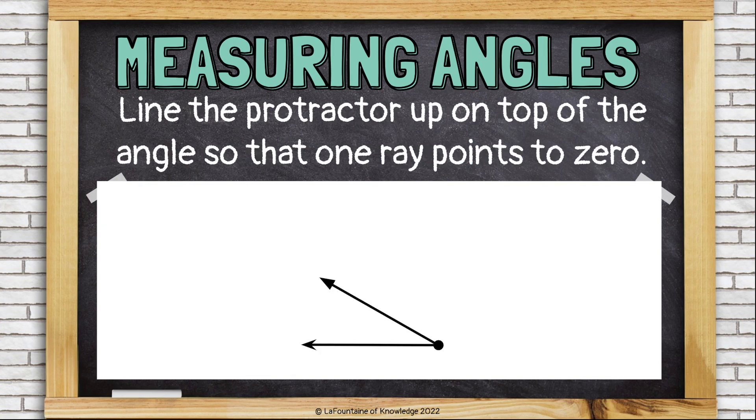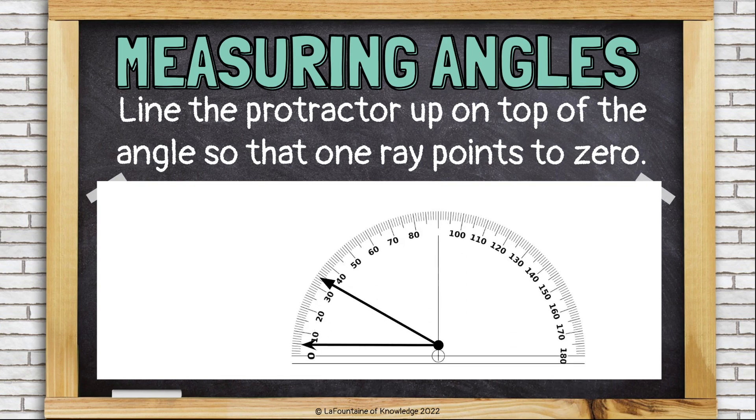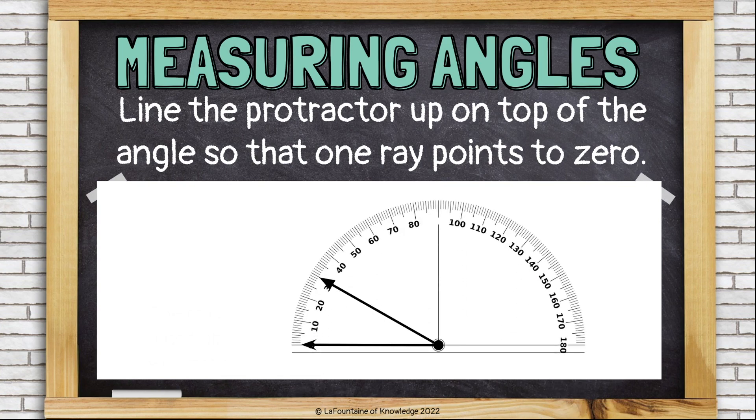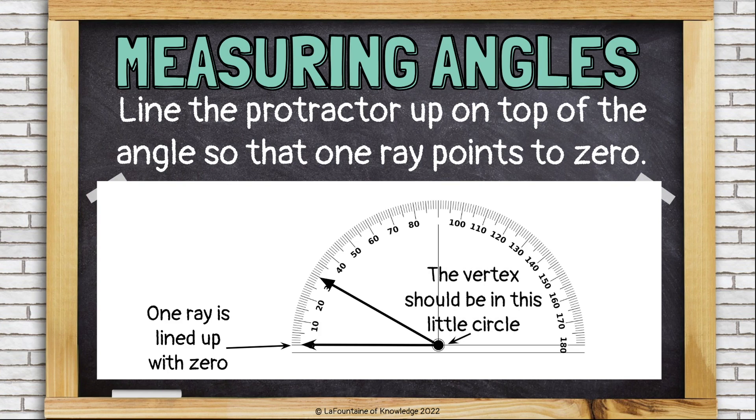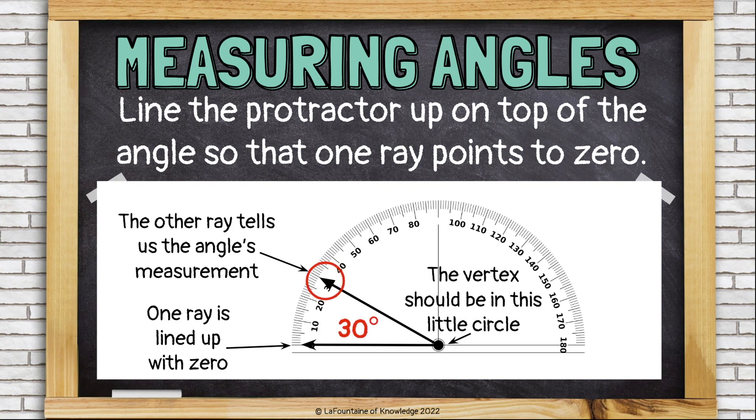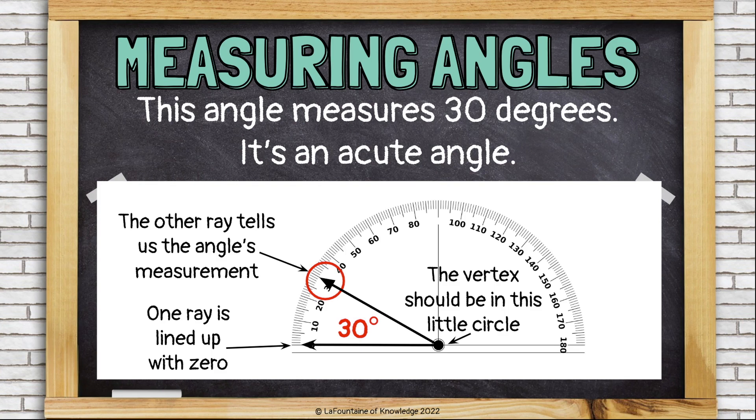Line the protractor up on top of the angle so that one ray points to zero. One ray is lined up with zero along the bottom. The vertex should be in this little circle. And then the other ray tells us the angle's measurement. It's pointing to 30 degrees. This angle measures 30 degrees. It's an acute angle.